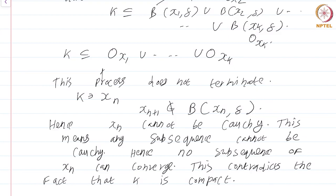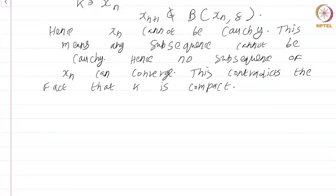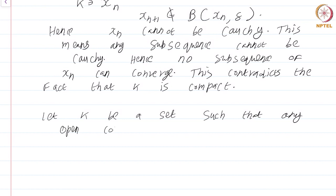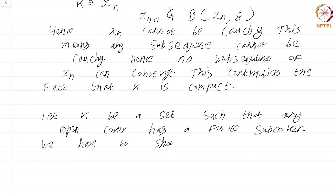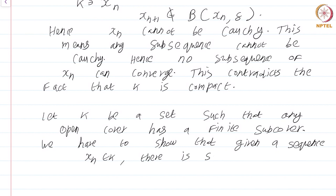So what we have shown is that if K is compact, any open cover will have a finite subcover. Now for the converse: let K be a set such that any open cover has a finite subcover. We have to show that given a sequence x_n in K, there is some convergent subsequence.